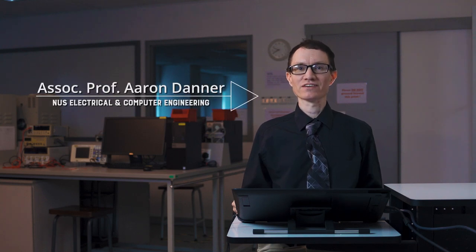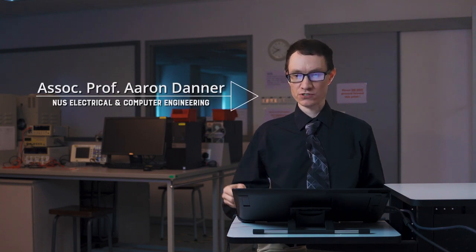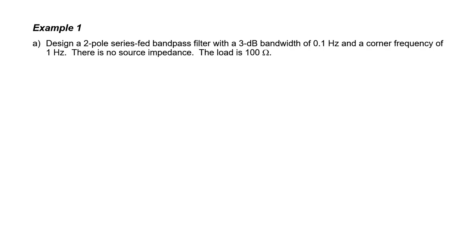Let's work a few problems related to two-pole filters. In the first example, we're going to be designing a two-pole series-fed bandpass filter. It's mentioned in the problem that there's no source impedance, which means we can go ahead and draw our prototype circuit. There's our source, there's our load, and in between the two dotted lines is going to be our filter.